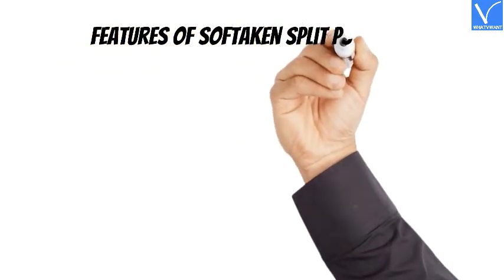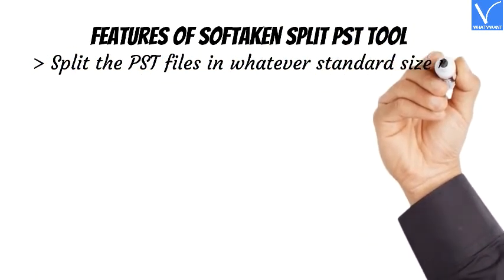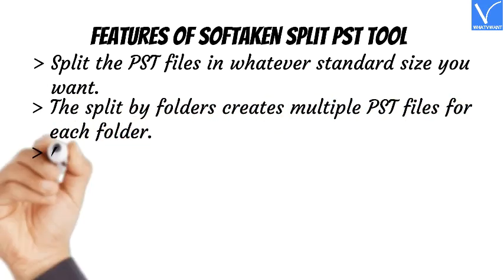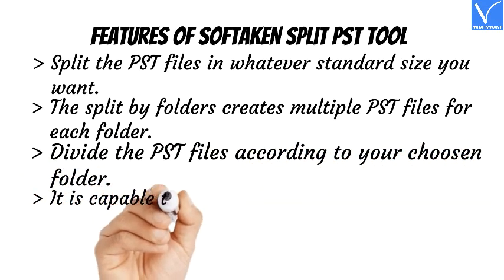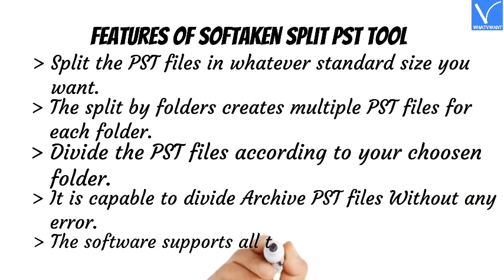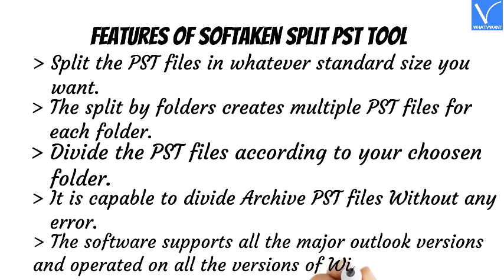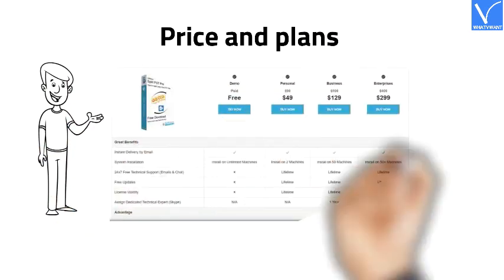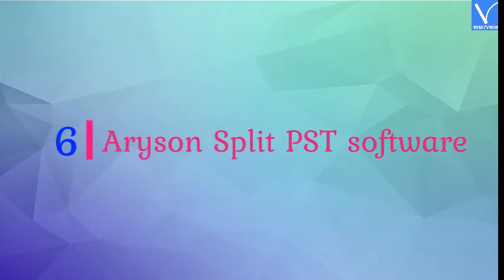Features of Soft Taken Split PST Tool: split PST files in whatever standard size you want; the split by folders option creates multiple PST files for each folder; divide PST files according to your chosen folder; capable of dividing archive PST files without any error; supports all major Outlook versions and operates on all versions of Windows OS. The product link is provided in the description.